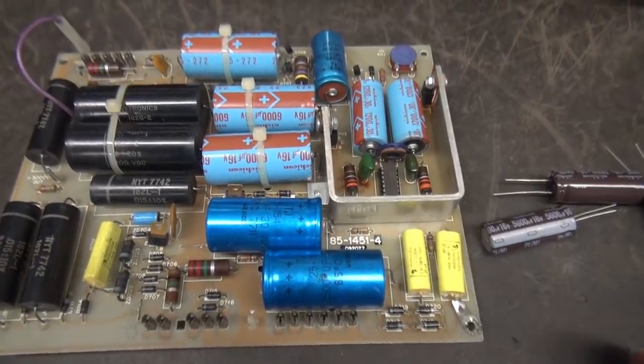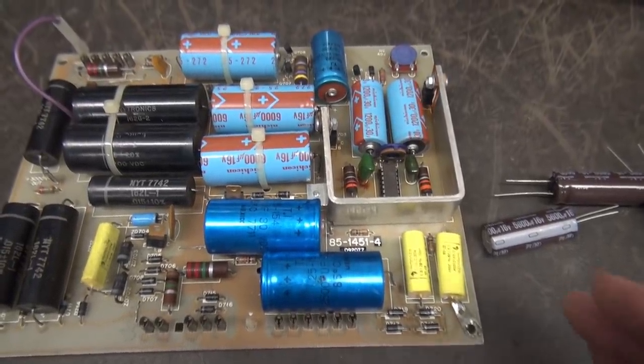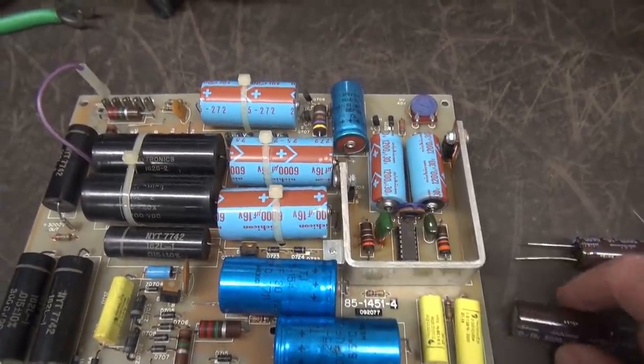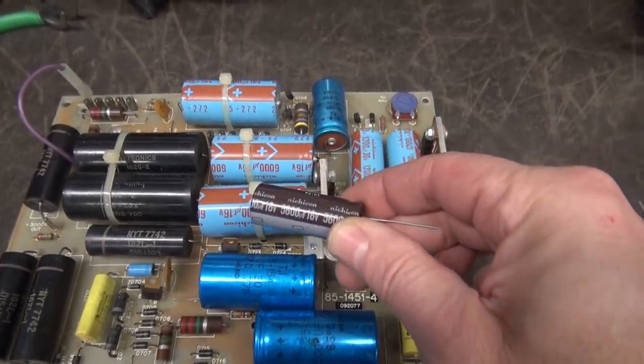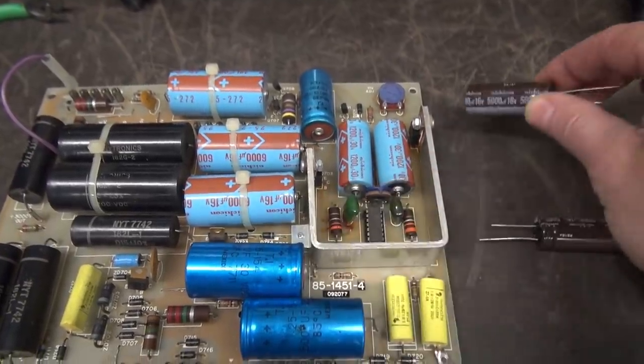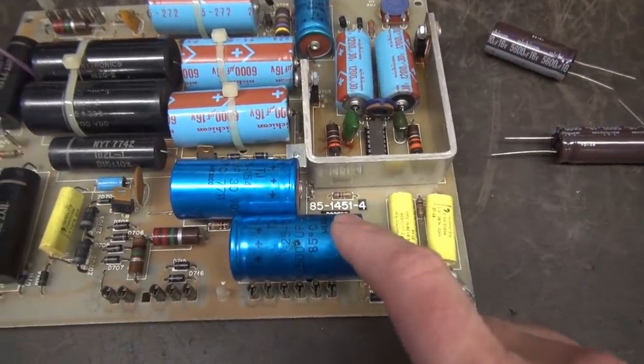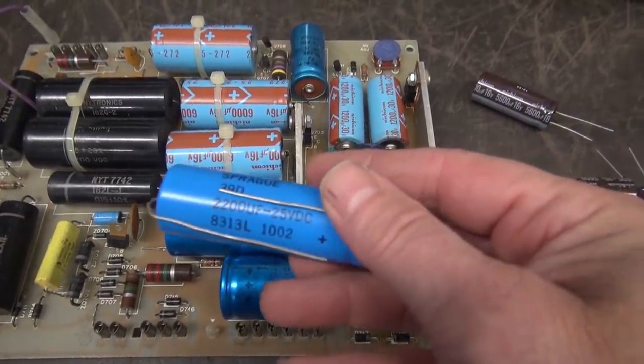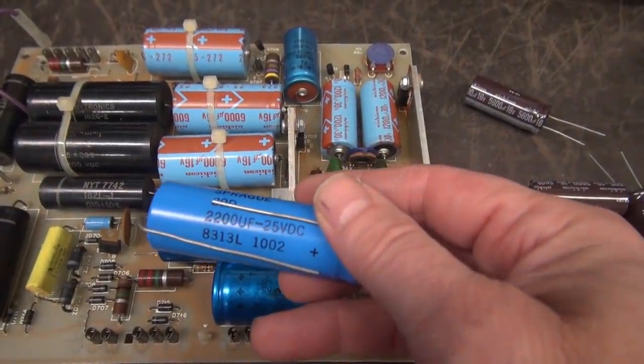So you'll find some of these capacitors or odd values. You don't have to hit it right on the money. For example, these 6,000 microfarad at 16s, I'm going to put in these 5,600 microfarad at 16s. These say 2,500 at 25 volt and I'm going to replace it with these 2,200s at 25 volts.